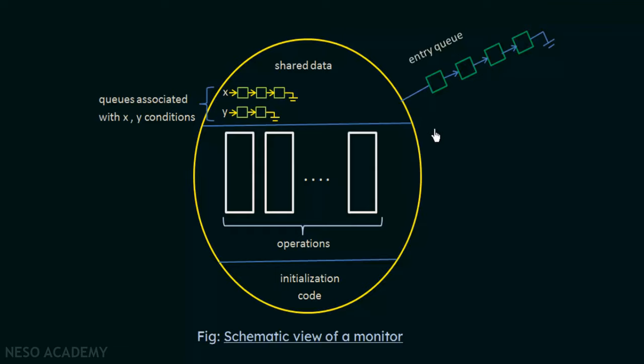Now we have a good idea of how monitors work. In the next lecture we will apply monitors to solve the dining philosopher's problem — a classic synchronization problem. When we previously solved it using semaphores, deadlocks could arise. We will see if monitors can provide a deadlock-free solution, which will also give us a clearer picture of how monitors are put to use.